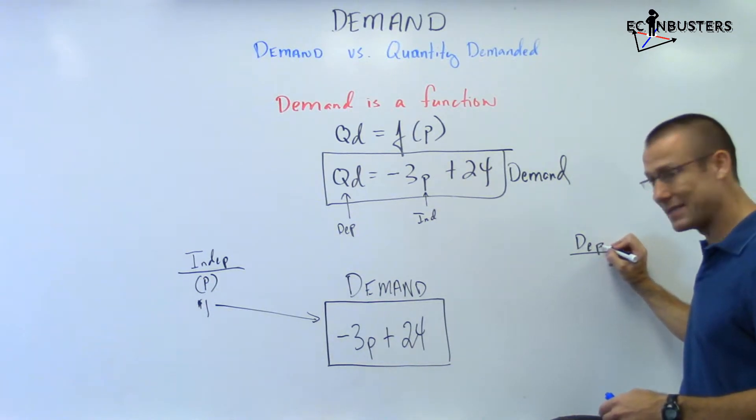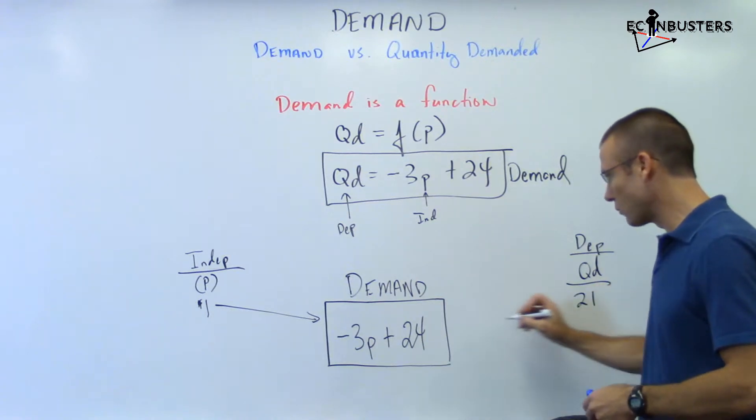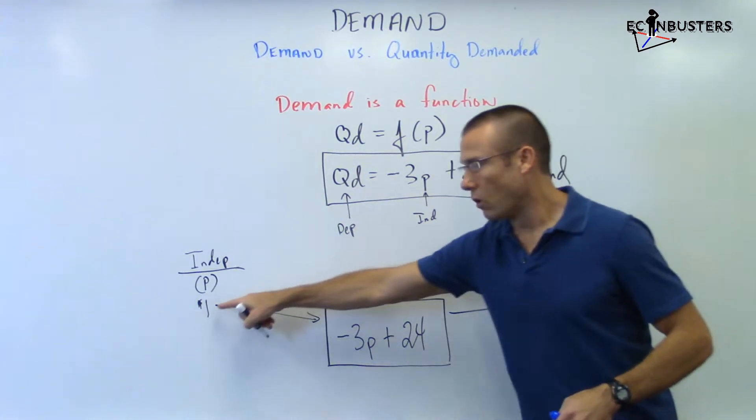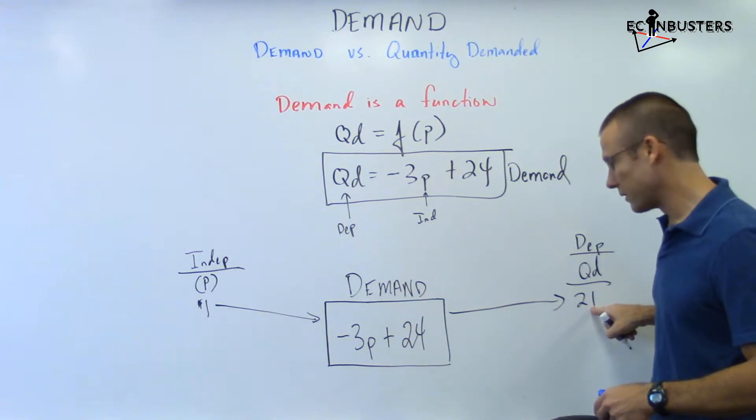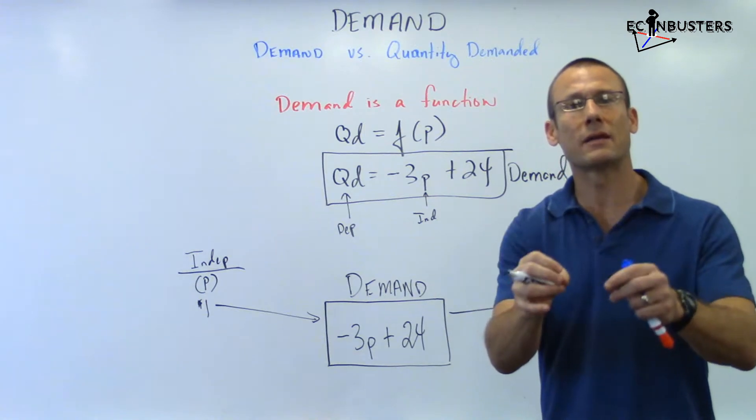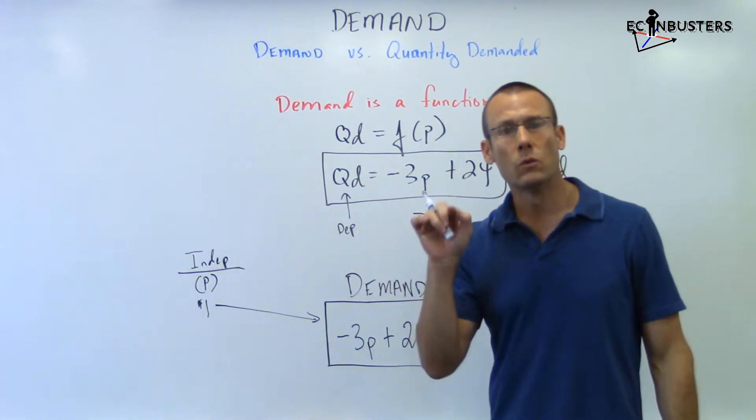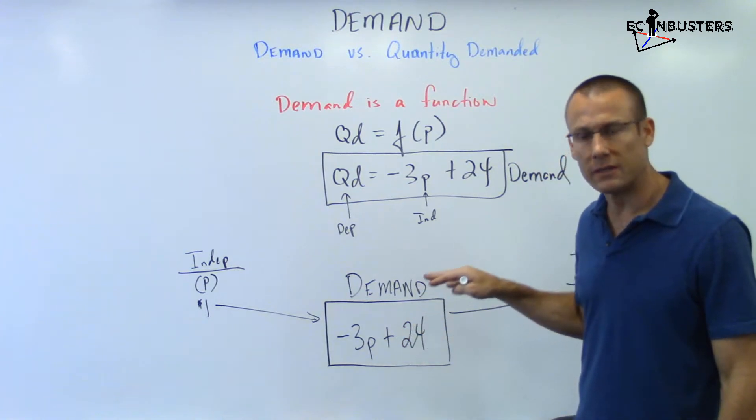Before I even write 21, what's the dependent variable? It's quantity demanded. We get 21 out. $1 price goes into the function, quantity demanded of 21. The quantity demanded is a particular amount at a particular price. That's what we mean when we say quantity demanded. Demand is the function itself.